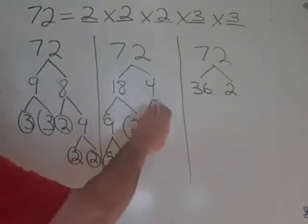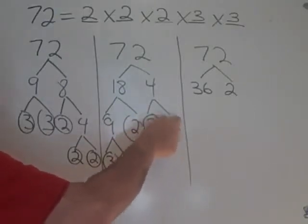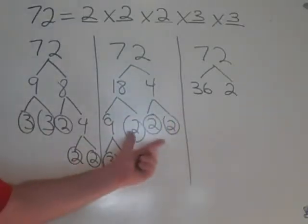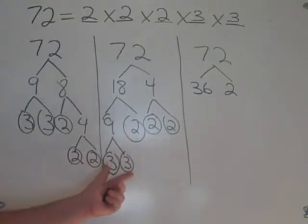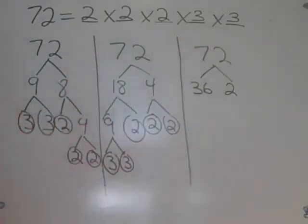4 is not prime. You can write it as 2 times 2. And the 2's are prime. Notice, 3 2's multiplied by 2 3's. Exactly the same answer.